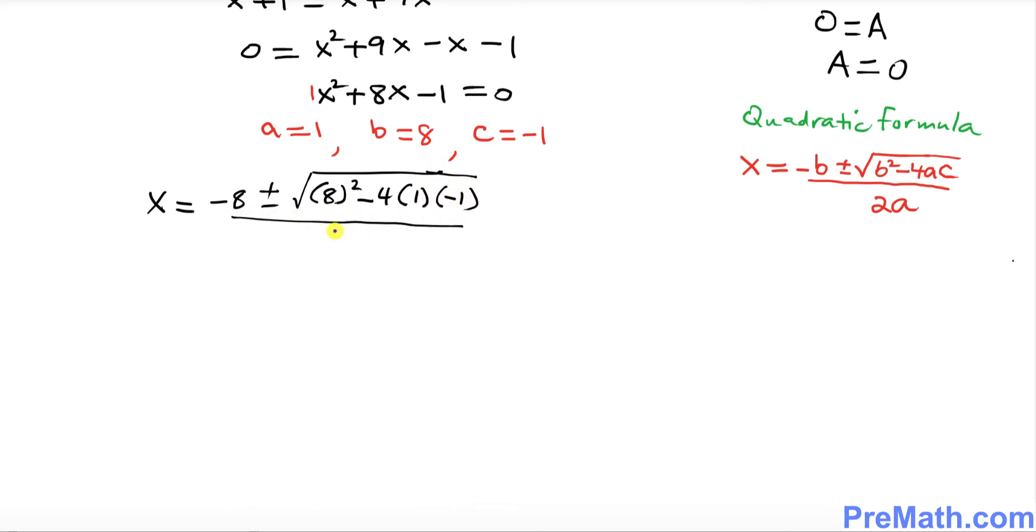So far so good. Let's simplify it. Negative 8 plus or minus, 8 squared is 64, and this negative and negative become positive 4, divided by 2 times 1, which is 2.